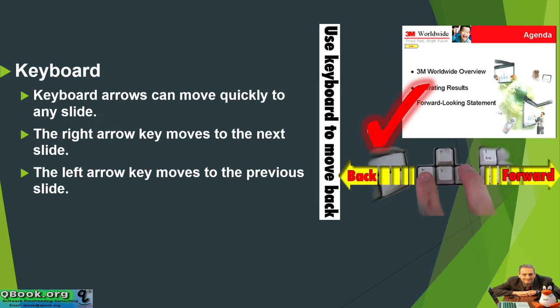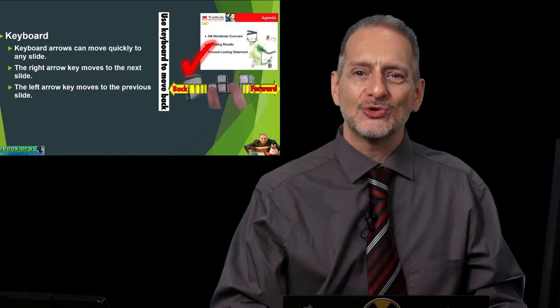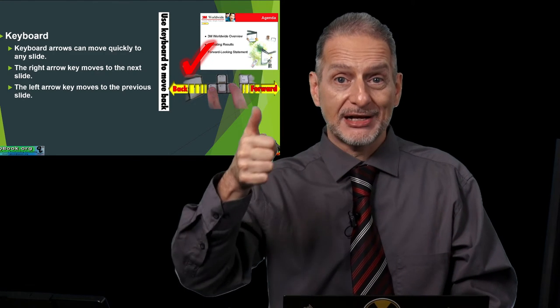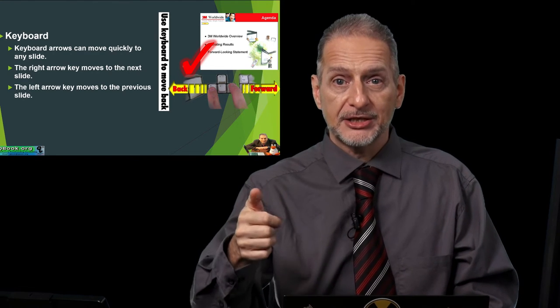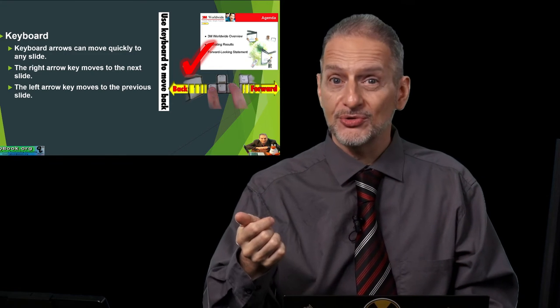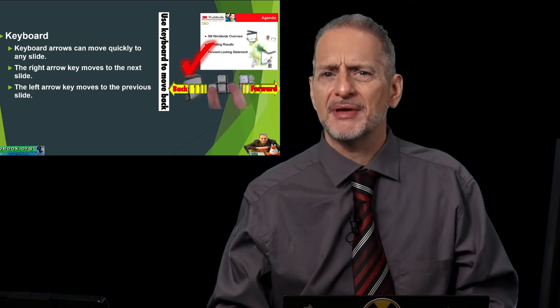So when you're making your presentation, maybe consider using the keyboard right in front of you. Of course, often we have a clicker. Maybe test the clicker to make sure. Does the other button go backwards or does it open up a menu? So test it beforehand and make sure.